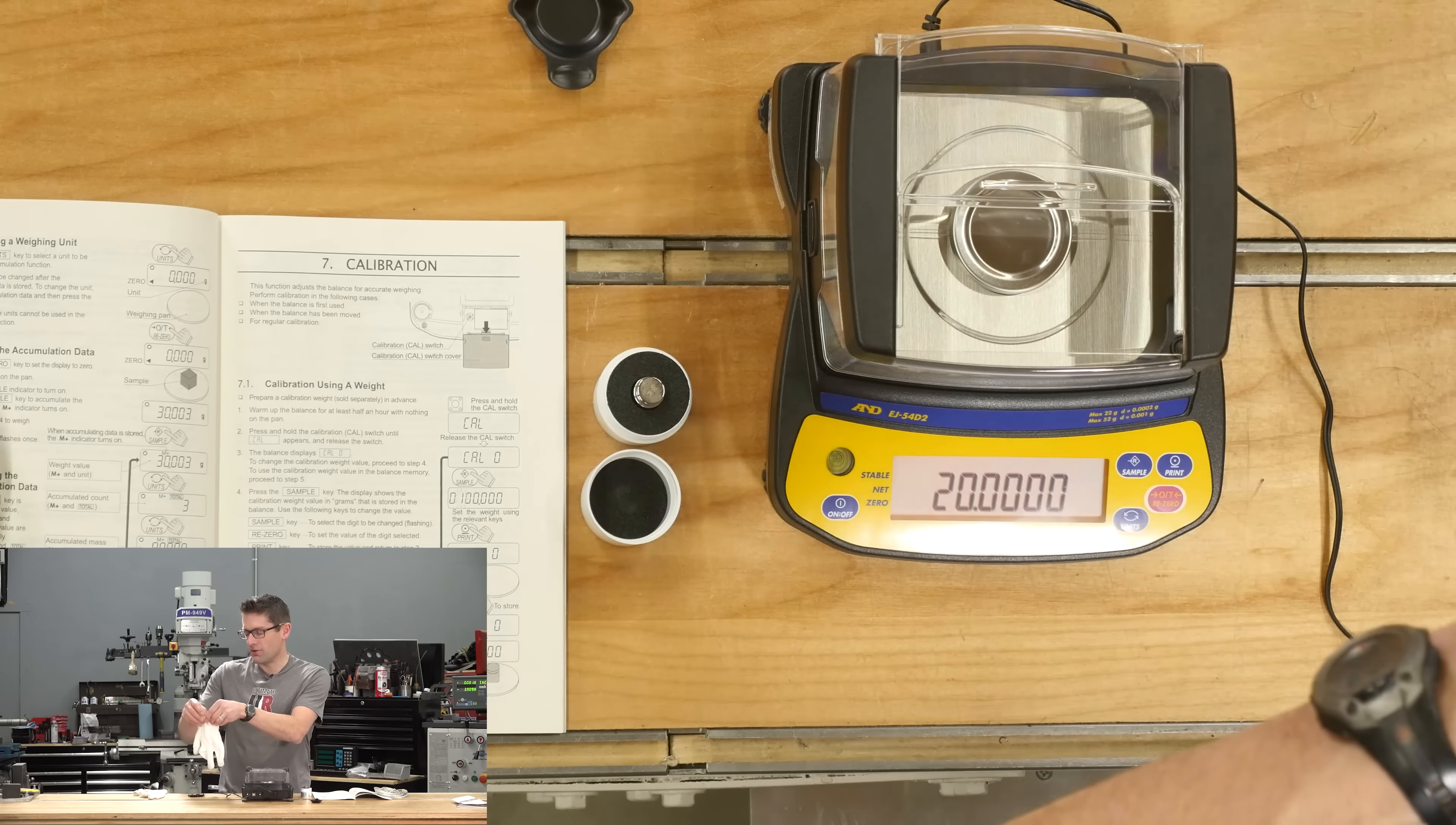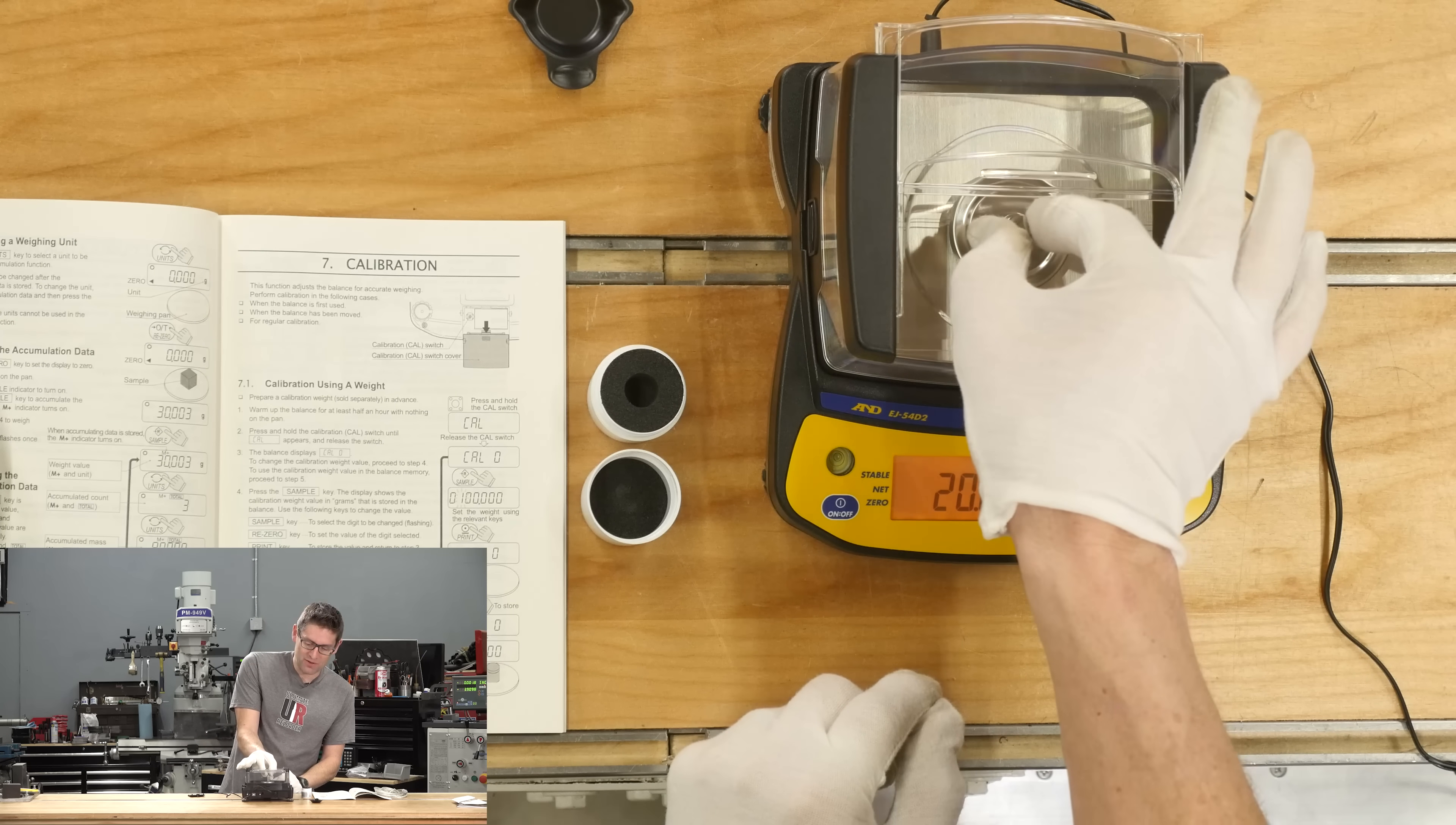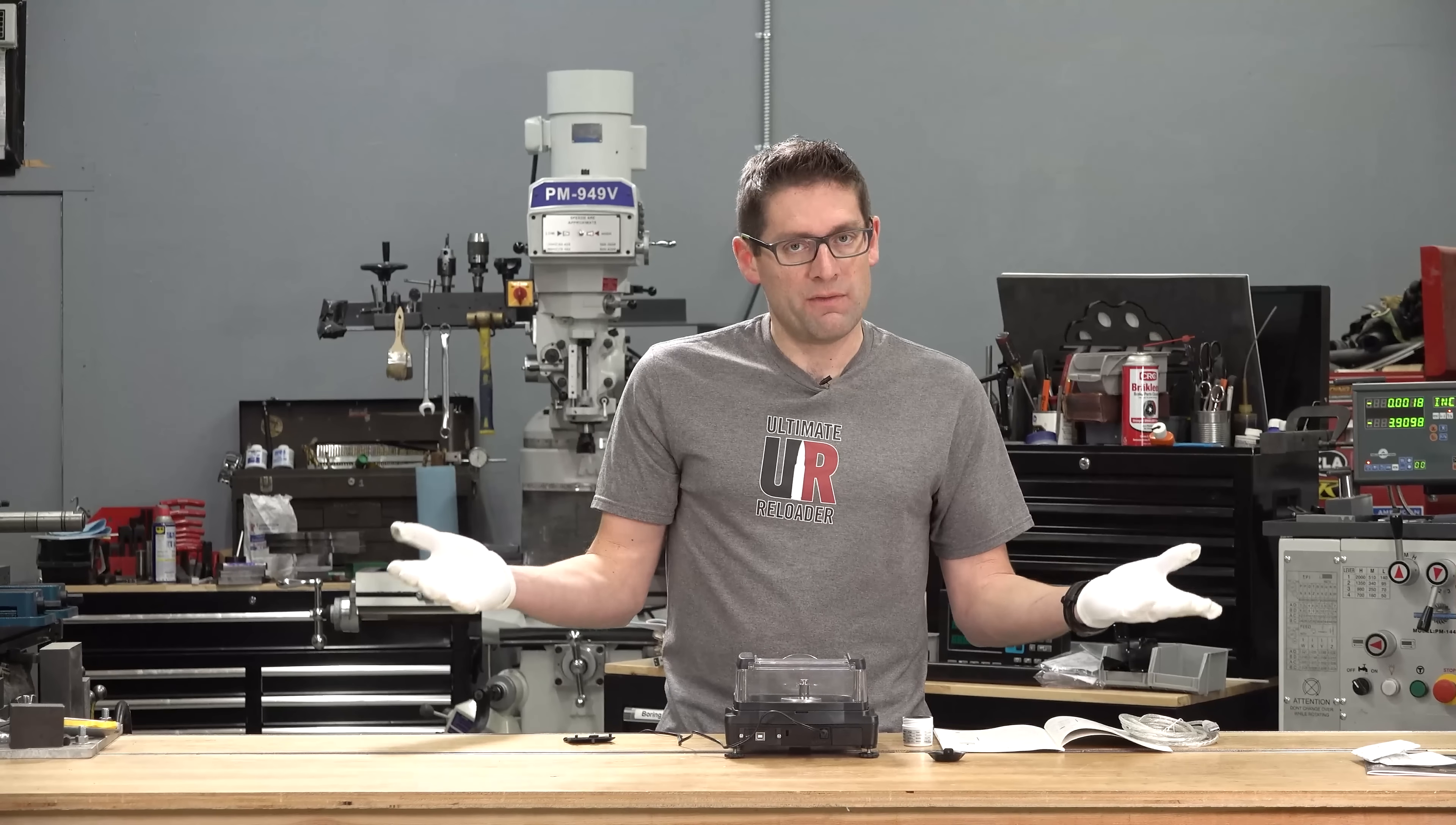Now, just to be extra sure that I'm being above board here, I'm going to put on my white gloves, because we don't want to get finger oils on this calibration weight. Sounds a bit excessive, but we are talking about an ultra-precision weight here. We're going to close the windscreen and then hit print again. It says end now. Now we can turn the machine on, and we should be fully calibrated.